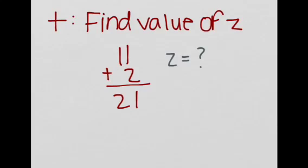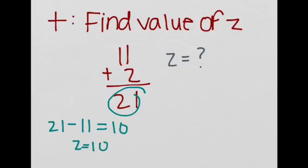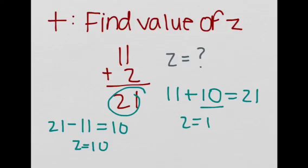So let's see how to tackle this. Because we know that addition and subtraction are inverses, we're going to say 21 minus 11 is equal to 10. So we're going to say that z must equal 10, because 11 plus 10 is equal to 21. So z equals 10.